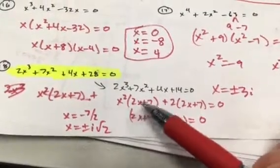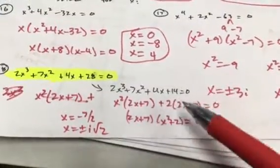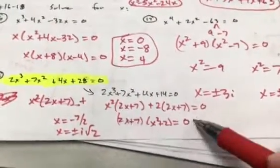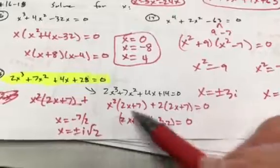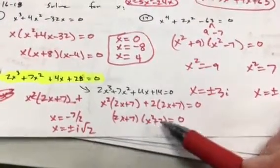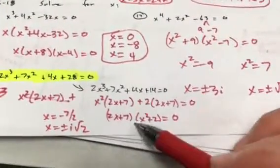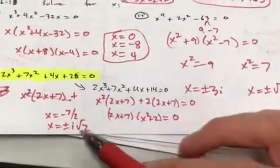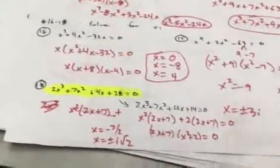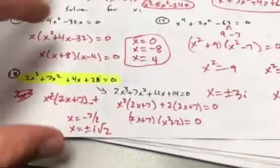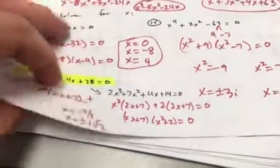Factor by grouping: the first two terms have x² in common, leaving (2x + 7); the last two have 2 in common, also leaving (2x + 7). Set 2x + 7 = 0 to get negative 3.5. Set x² + 2 = 0: x² = negative 2, giving plus or minus i√2. That one should be easier on your final — the original was a little challenging.